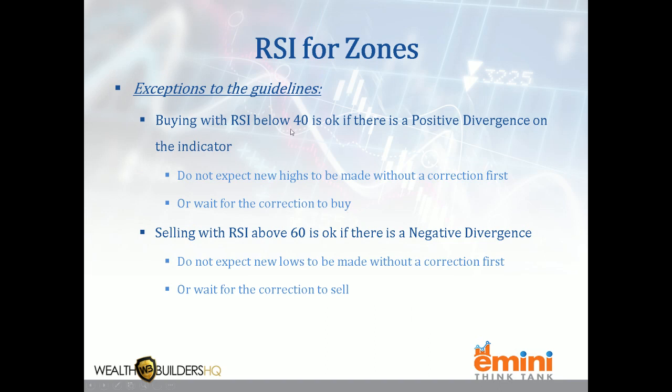When buying with the RSI below 40, you're okay to buy if there's positive divergence. However, anytime prices start to move up and the RSI was below 40 at the beginning of the move up, you are not likely to make a new high without a correction first. So if you see positive divergence, keep that in mind — you're going to get a pullback before making new highs, or you can simply wait until that correction actually occurs. Similarly, if we're above 60 in a downtrend and want to go short, it's okay as long as we have a negative divergence — but if a move down begins while the RSI is above 60, you're not likely to make new lows without another pullback correction. You can enter and simply be aware a correction is going to happen, or wait for the correction before getting into the position.